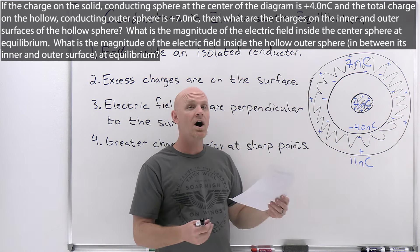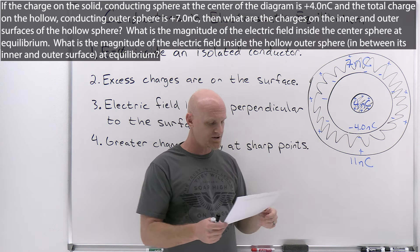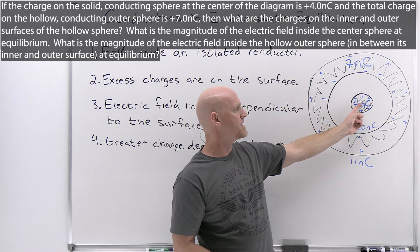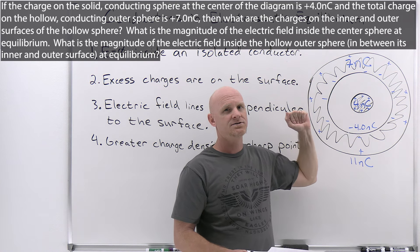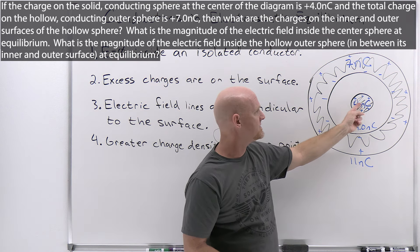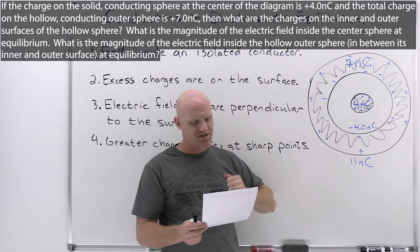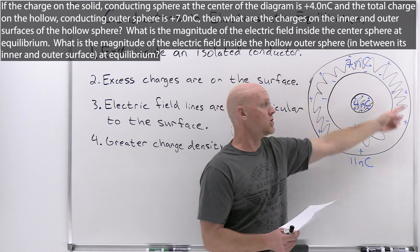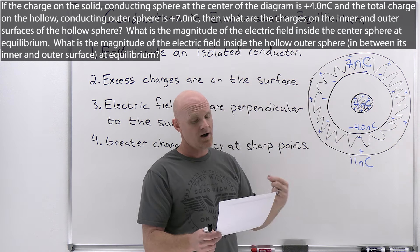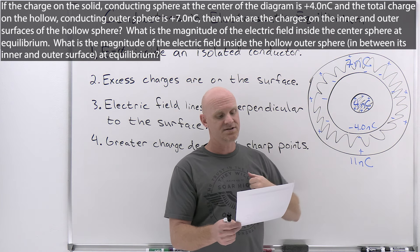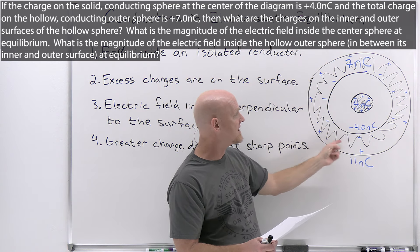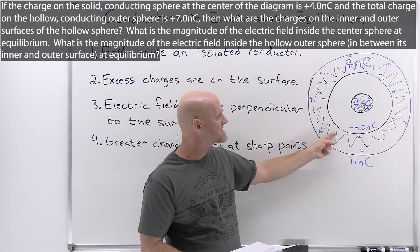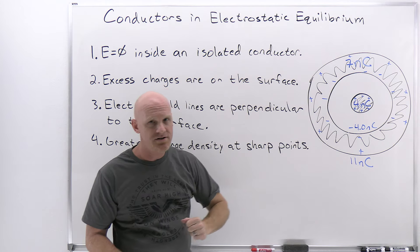The next two questions are not calculations — they just test recall of the rules. First: what is the magnitude of the electric field inside the center sphere at equilibrium? At equilibrium, the electric field is zero everywhere inside an isolated conductor, so anywhere inside this sphere the electric field is zero. Second: what is the magnitude of the electric field inside the hollow outer sphere — meaning inside the conducting material itself, between the inner and outer surface? Again, inside the conducting material at equilibrium, the electric field is zero.